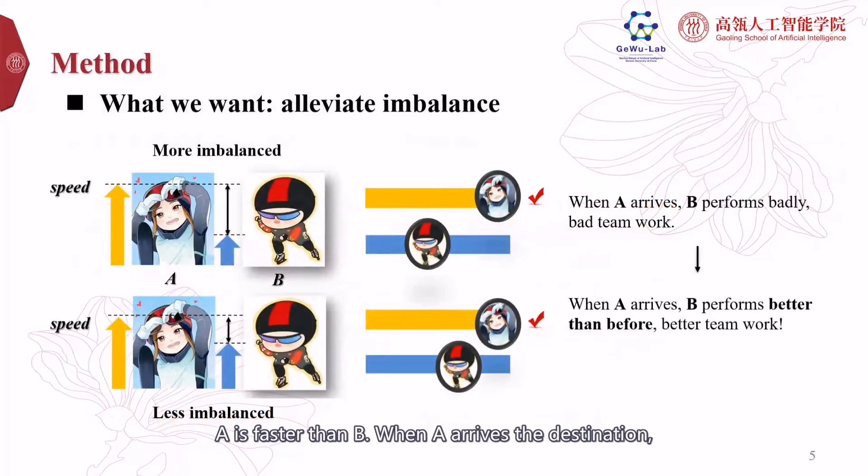When A arrives at the destination, B just finishes half. To improve the team performance, A should help B to speed up. So when A arrives, B can finish more journey than before. It's similar in multimodal learning. We let the dominant modality slow down to wait and help the weak modality so they can make better teamwork.